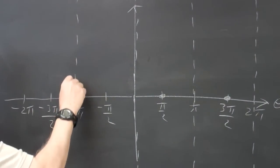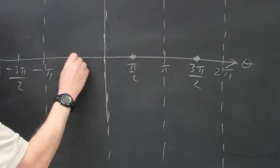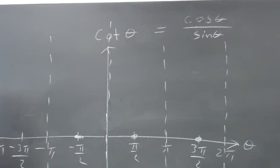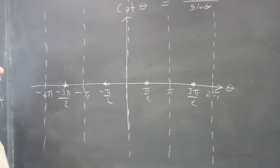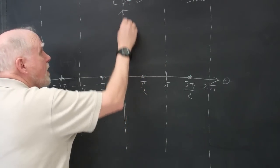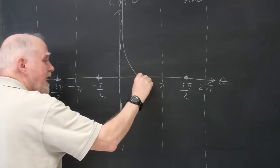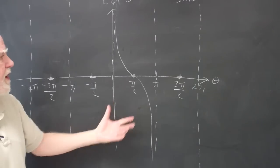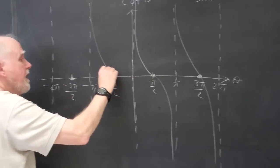The vertical asymptote repeats every pi units, just like the tangent. Between zero and pi over two, the cotangent is positive because all functions are positive there, so it goes up the asymptote. Between pi over two and pi, the cosine is negative so it goes negative. This is our central branch, and it repeats over and over just like the tangent did. The period is pi.